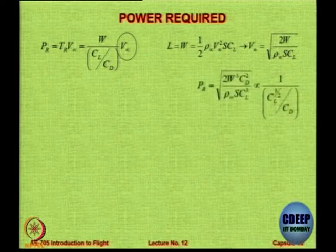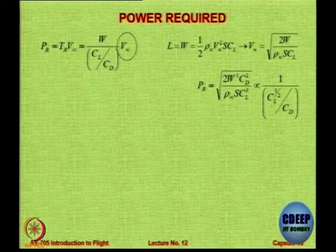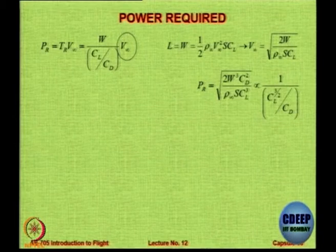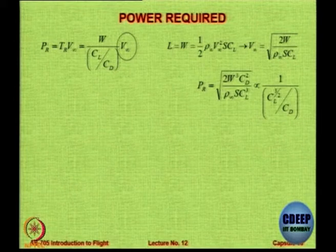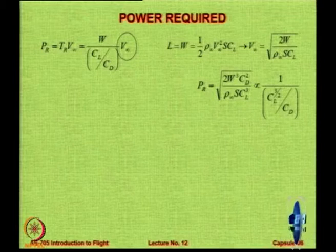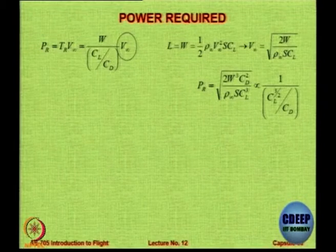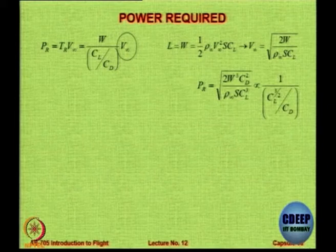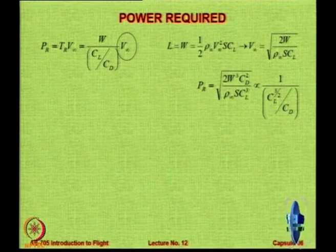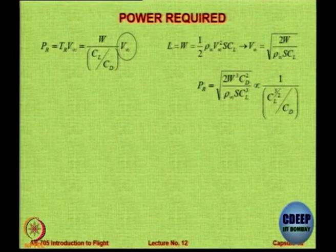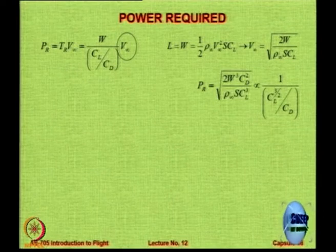What do you get? You will get an expression for power required as W upon (CL/CD) into V∞. This V∞, which is root of 2W by ρSCL, goes in that particular place, and the W outside will come inside the square root sign as W squared, so it becomes W cubed. The CL/CD outside, coming inside the square root, will become CL² by CD². The CL² will multiply with the CL already in the denominator to become CL³, and CD² comes up. So the expression will be: Pr = √(2W³CD²/(ρ∞SCL³)).